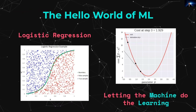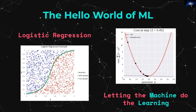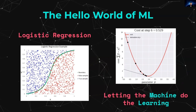Today we're going to cover something that delves into the world of machine learning — specifically logistic regression. This involves taking a specific data point and classifying it as correct or false — a binary classification. We're going to let the machine do the learning on the GPU.